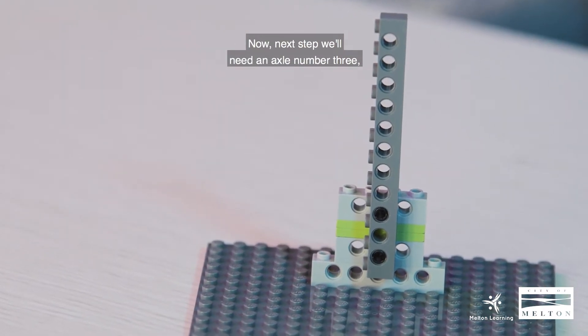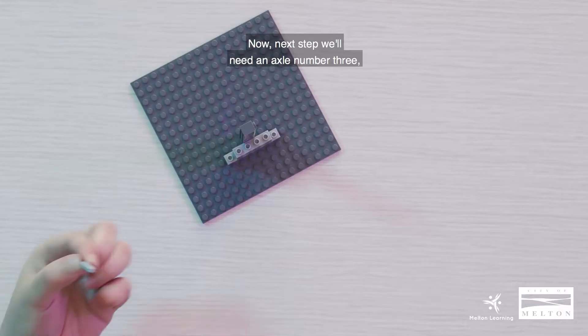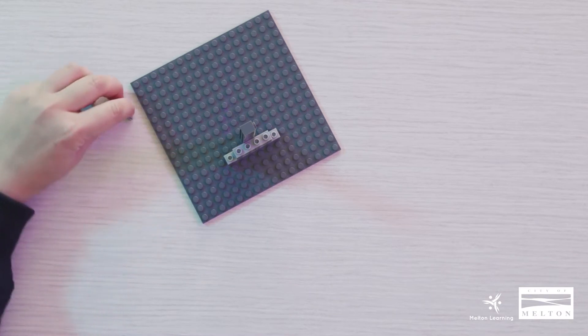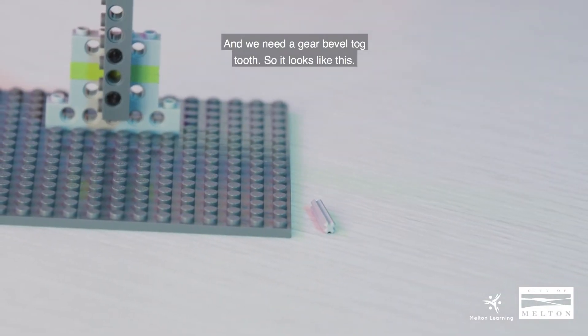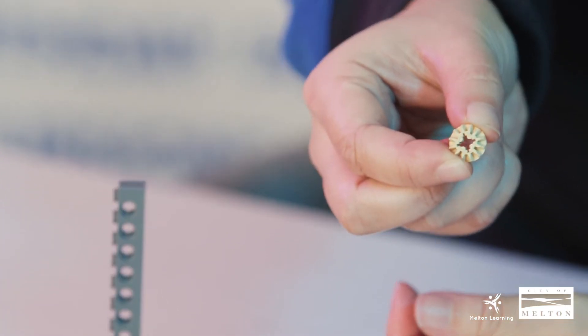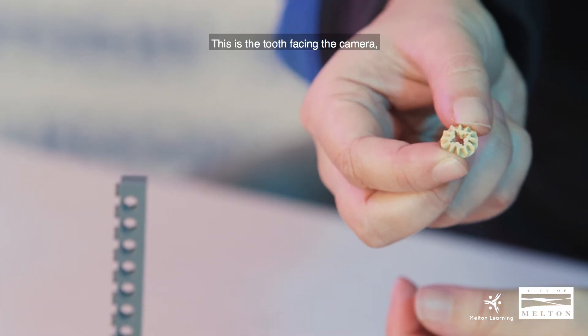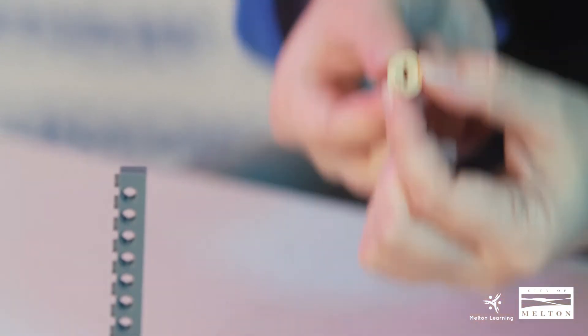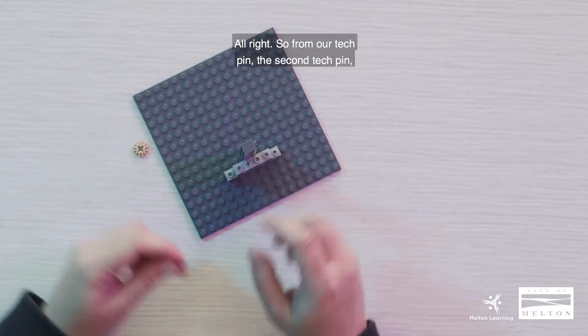Now next step we'll need an axle number three, just one piece. And we need a gear bevel twelve tooth. So it looks like this. This is the tooth facing the camera and this is the back.